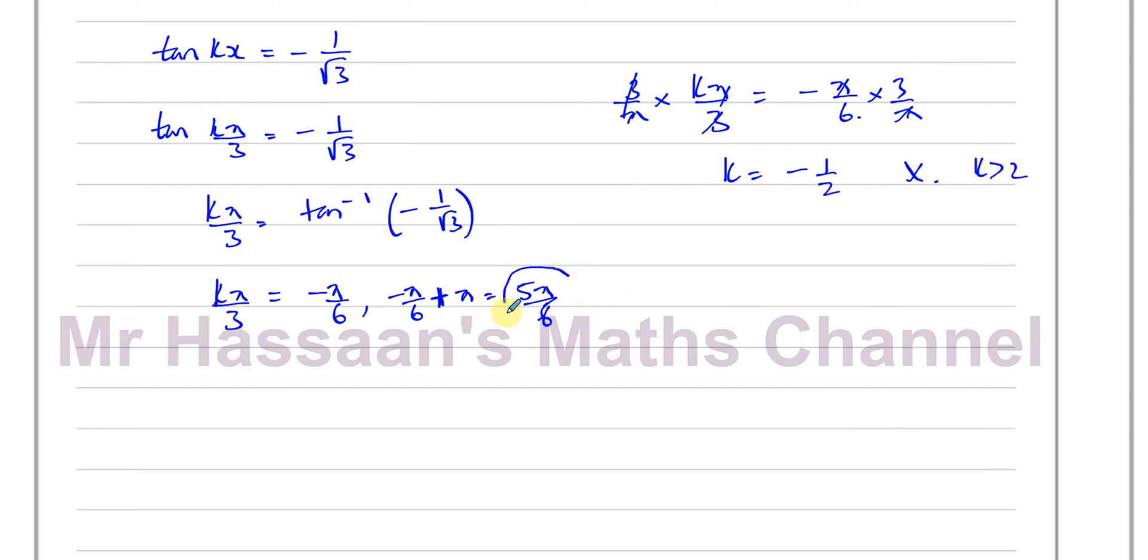Therefore, we're going to take the other solution, the next solution along, where the tan will give us negative 1 over root 3. So we can say k π/3 is equal to 5π/6. Now if I multiply both sides by 3 over π, the π's cancel out, the 3 cancels with the 6, I'm left with 5 over 2. So k is equal to 5 over 2.